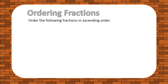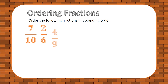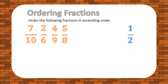Now we are going to order some fractions in ascending order — that means from the smallest to the biggest fraction. We use 1 out of 2, which is half of the whole, as a benchmark. Identify those fractions lower than 1 out of 2. We found that 2 out of 6 and 4 out of 9 are lower than 1 out of 2, so these are the two lowest fractions we need to compare.